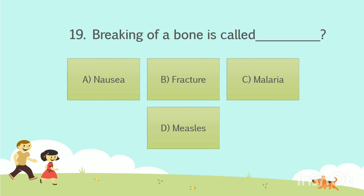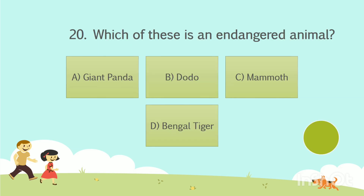The answer is Option B: Fracture. Question number 20. Which of these is an endangered animal? Option A: Giant panda. Option B: Dodo. Option C: Mammoth. Option D: Bengal tiger. Your time starts now.